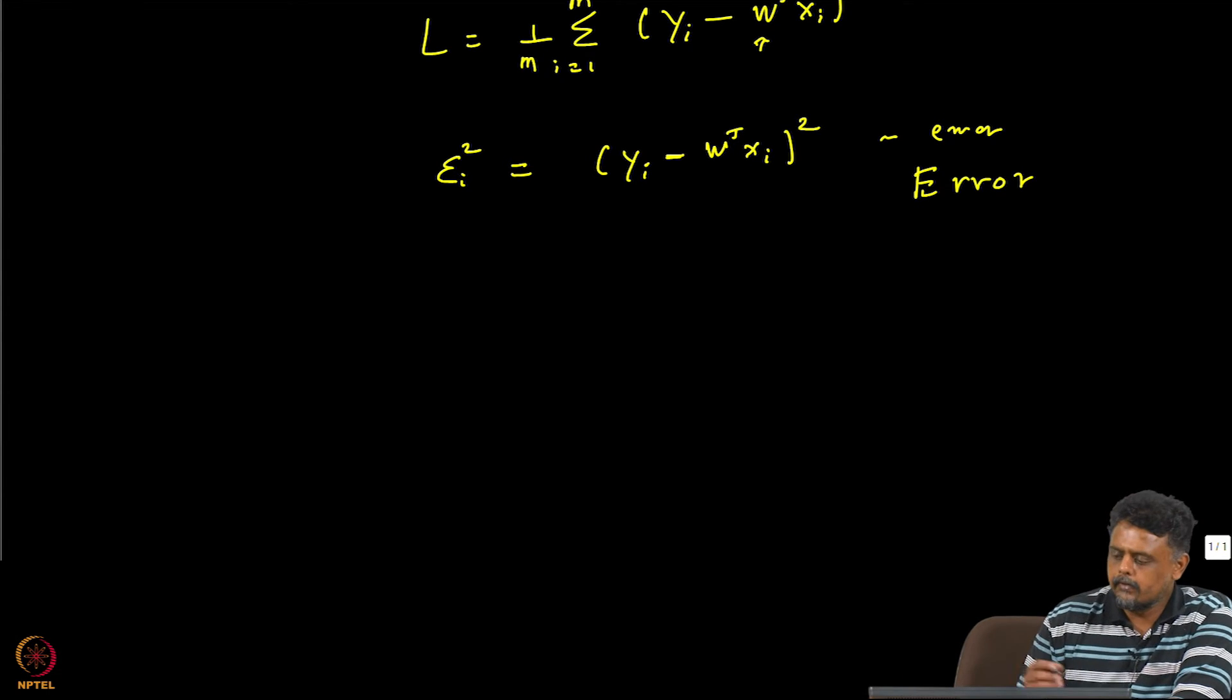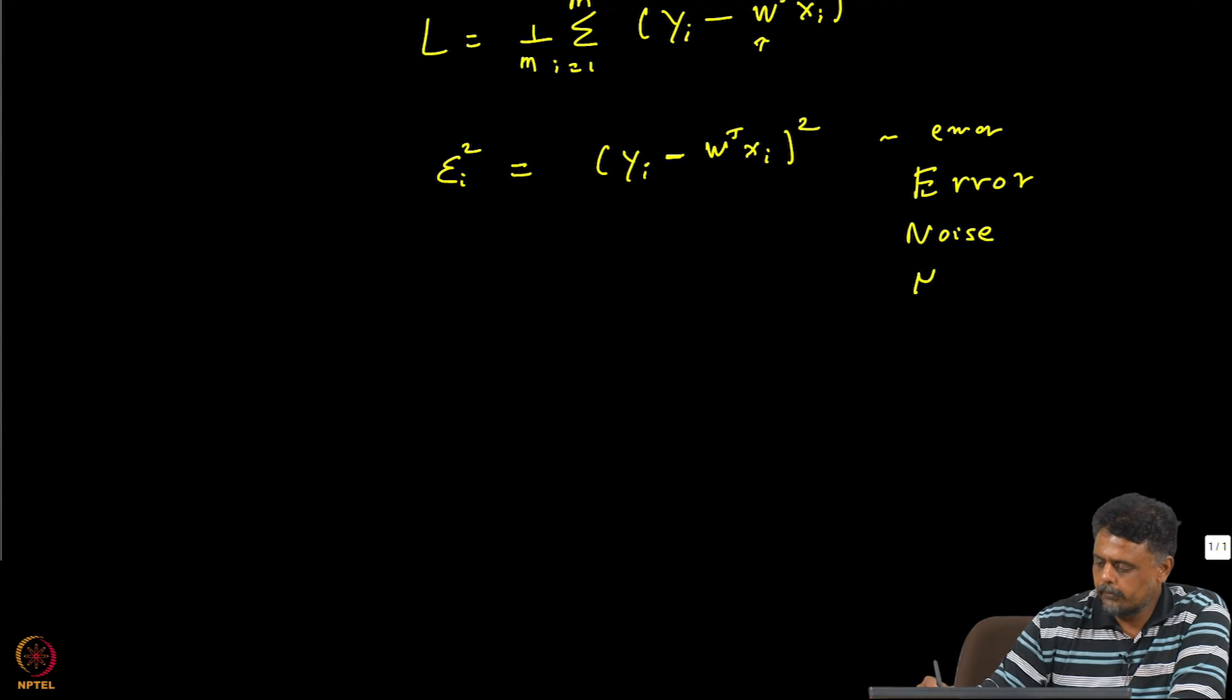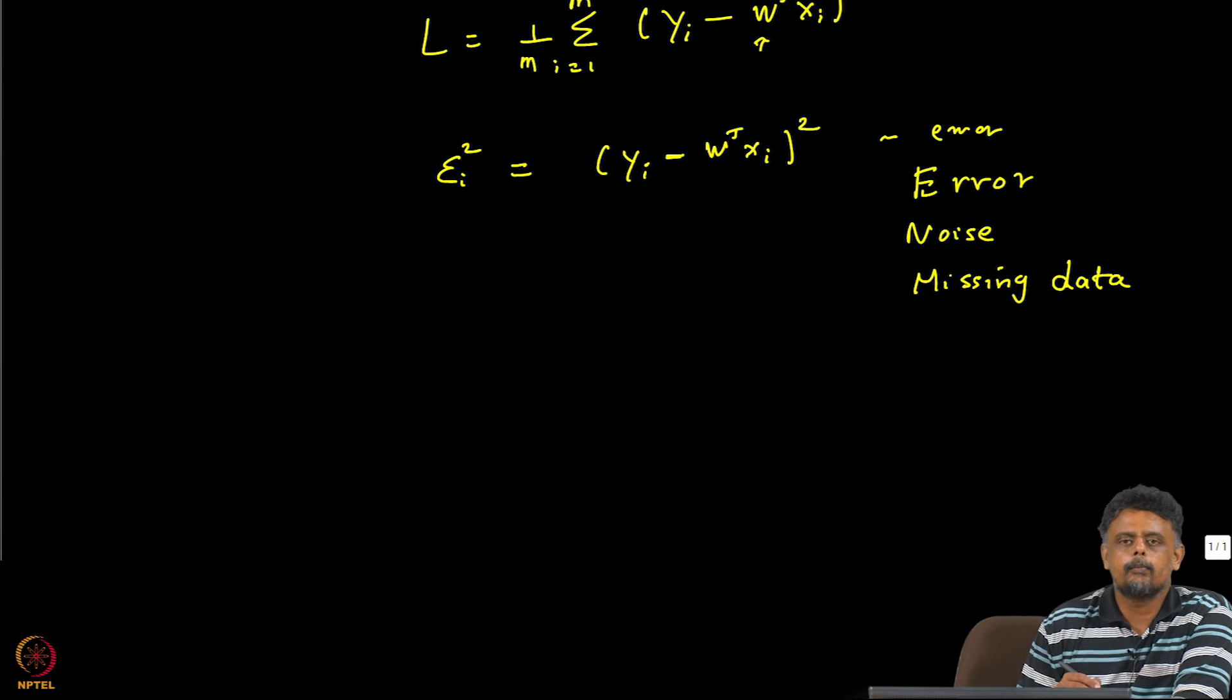So this error might be due to noise in our measurement and missing data. Maybe some features are missing. This could be the error due to those concepts, so because some xi might be missing for a particular data point and maybe there is an error in measuring the xi as well as measuring the yi.